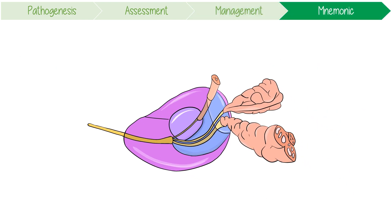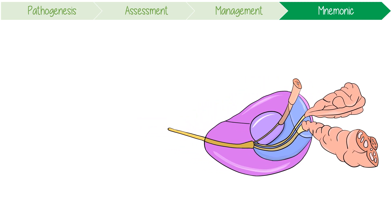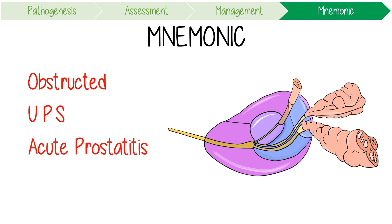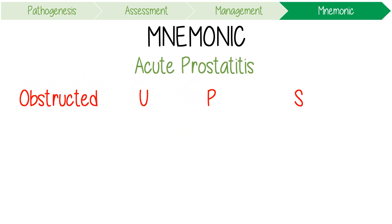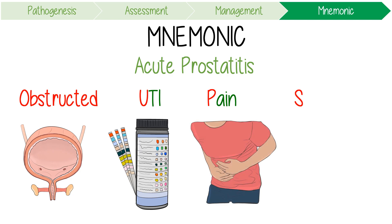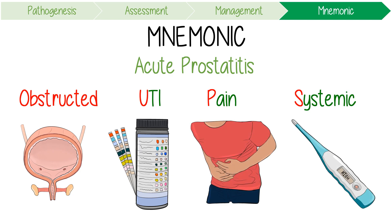To remember key facts about prostatitis, here are two mnemonics. 'Obstructed UPS workers usually get acute prostatitis' — this tells you the four cardinal features of acute disease are urinary obstruction, UTI features like increased frequency, pain, and systemic features of infection like temperature.